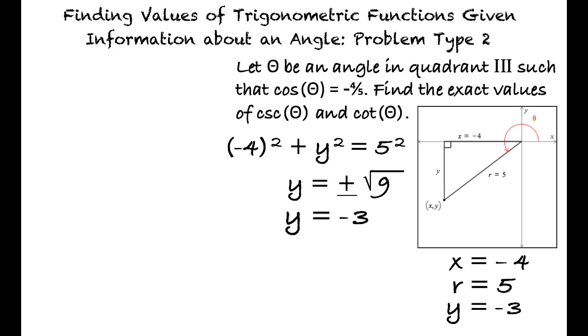Exactly. Substituting the values for hypotenuse and opposite side into the trigonometric identity for cosecant of theta yields negative 5 thirds, and substituting adjacent and opposite sides for cotangent of theta equals 4 thirds.